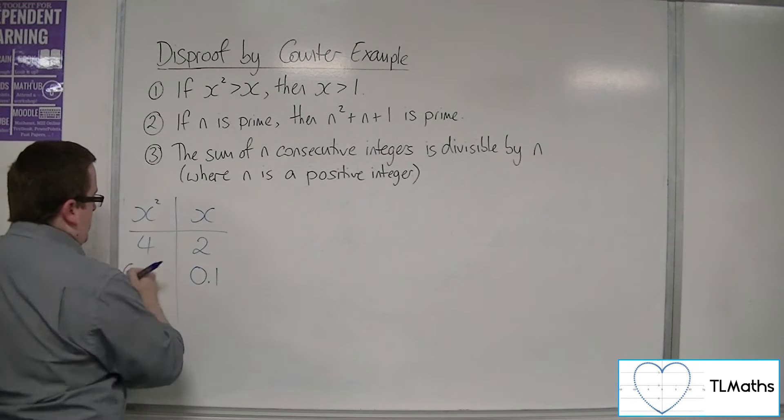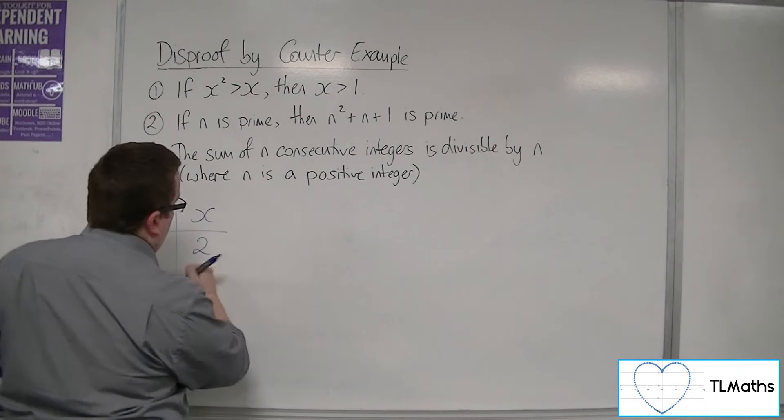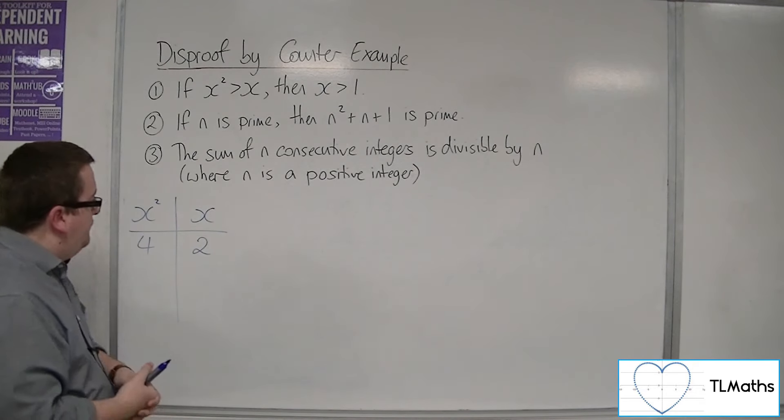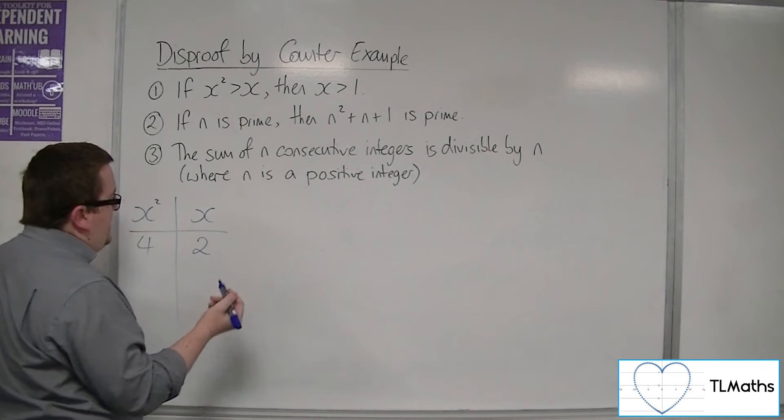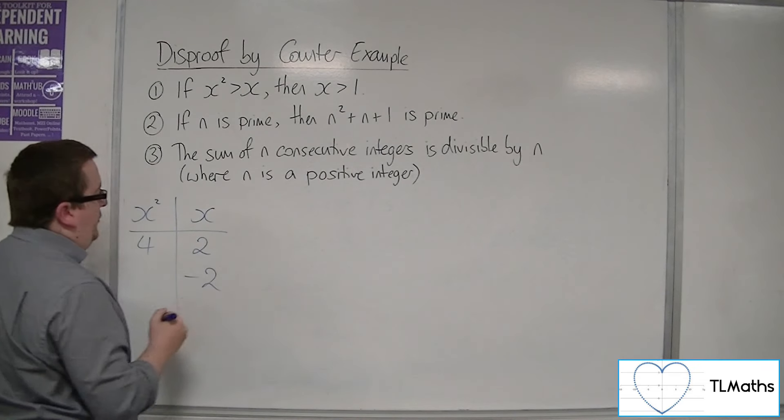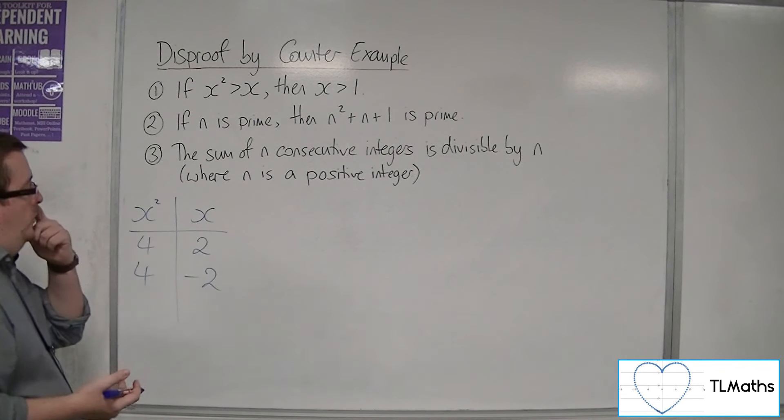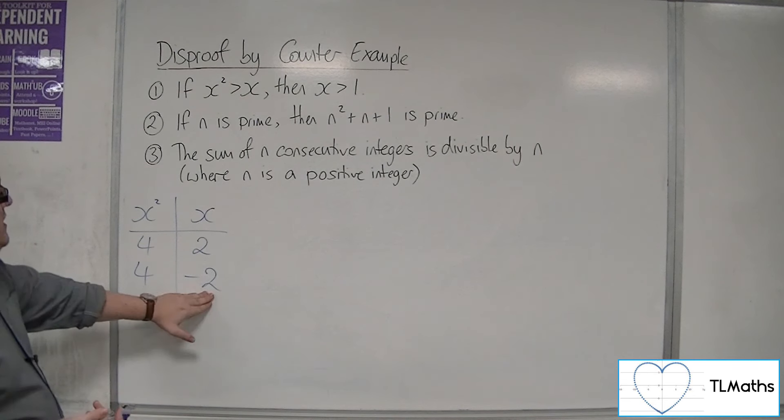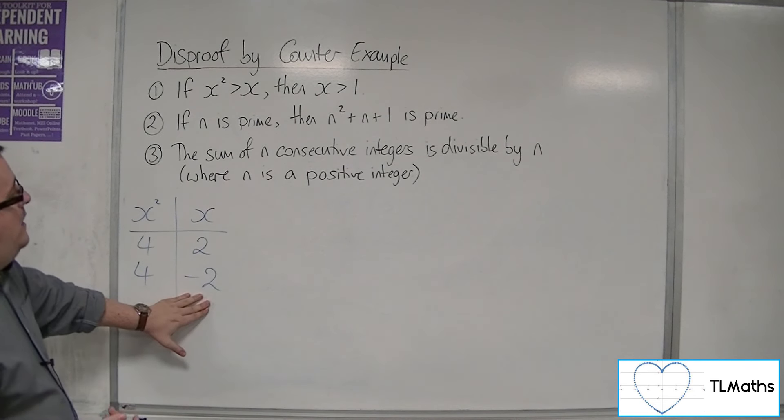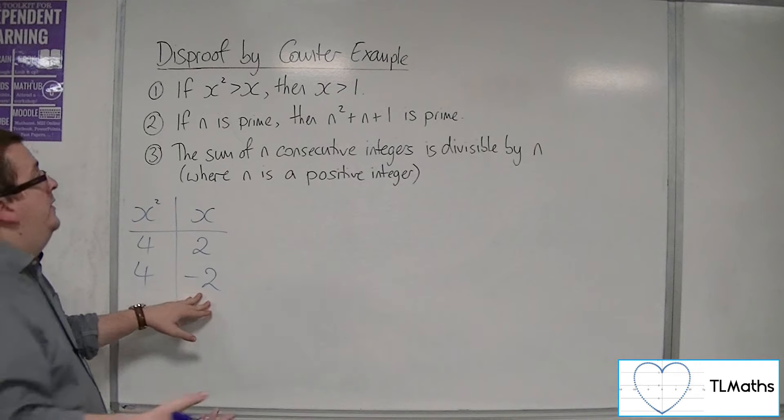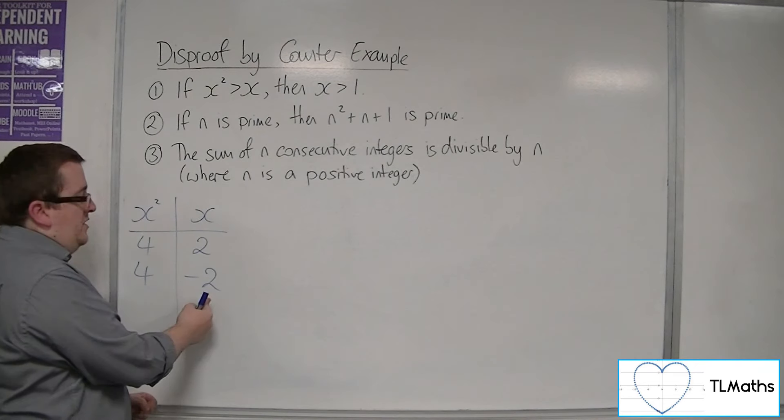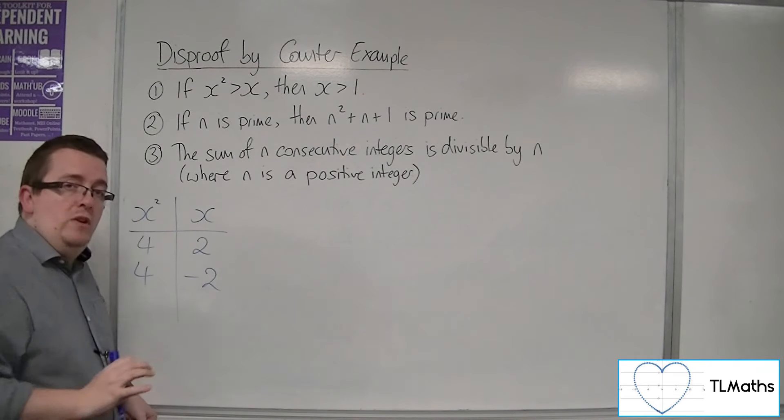So we can't go into those decimals between 0 and 1. We can't use 1. How about if we go into negative numbers? So if I try minus 2, then x squared is 4 still because minus 2 squared is 4. 4 is greater than minus 2, so that's correct. That works. But x is not greater than 1. Minus 2 is not greater than 1 here.